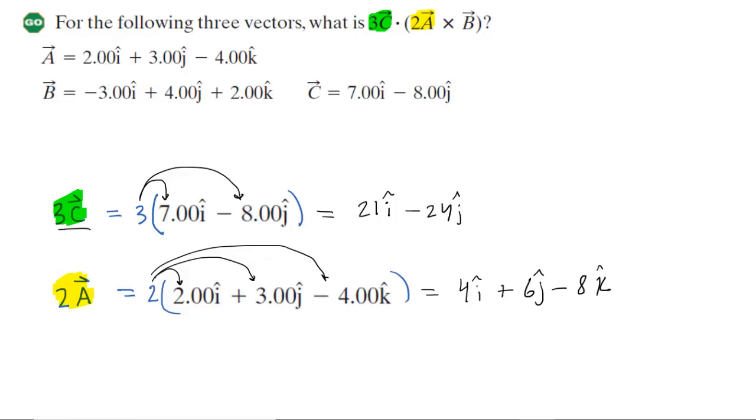So these aren't any of our final answers, but we're going to need these two quantities in order to proceed. Now we go back to the original problem, and it looks like what we have to do is take the vector quantity 2A, which we just determined, and then do a cross product with vector B, which we haven't touched. Let's show how to set up a cross product, because sometimes this is the most confusing part of these types of vector questions.